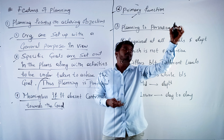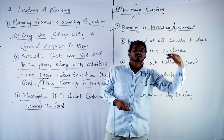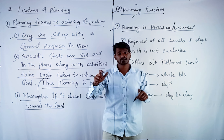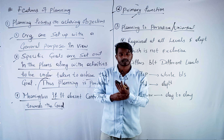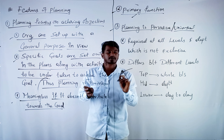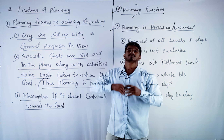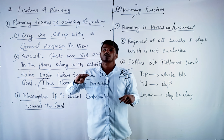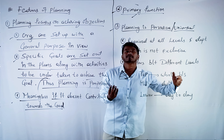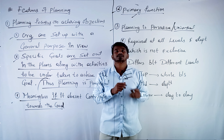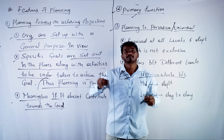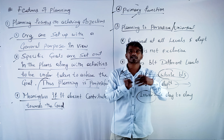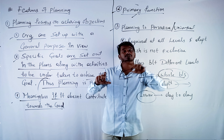The third feature is that planning is pervasive, meaning universal. At all levels of management, you require a plan. If there are three levels of management — top, middle, and lower — planning is required at each level. However, it differs at different levels according to their role and responsibility. Top level plans for the entire business, middle level does department-level planning, and lower level handles day-to-day activities.